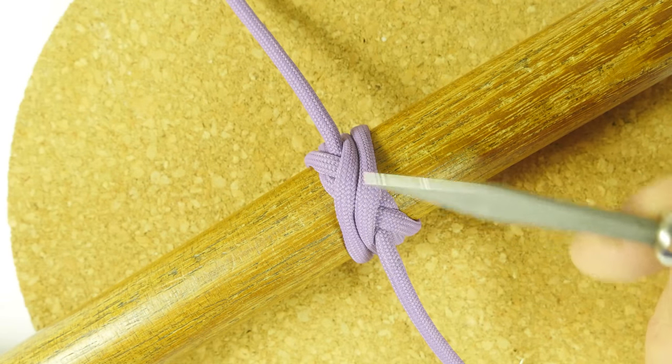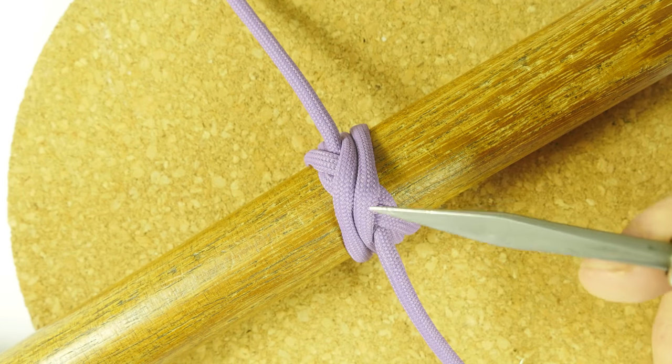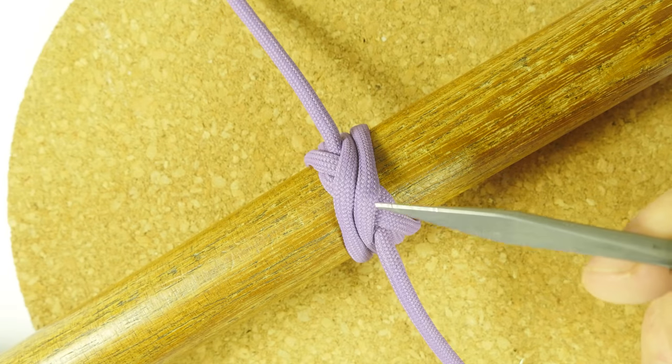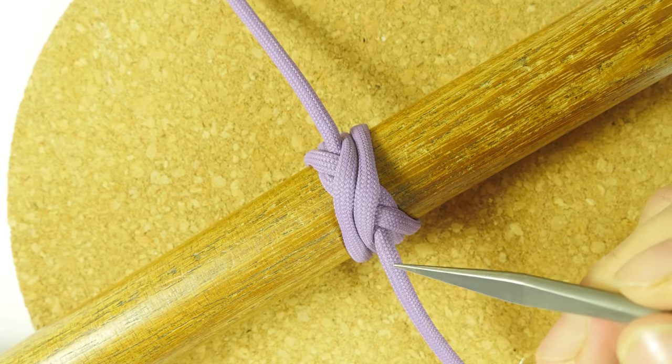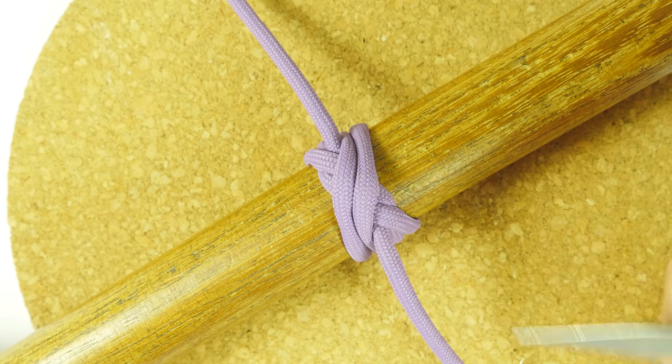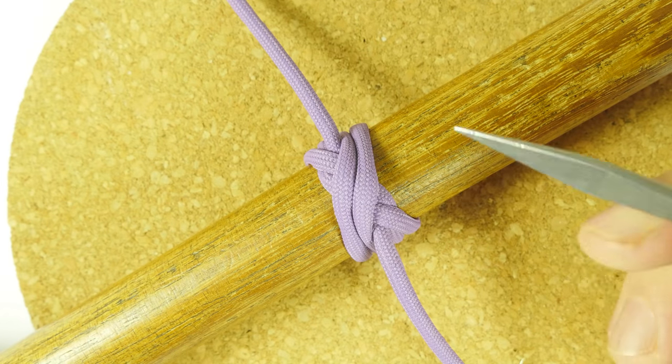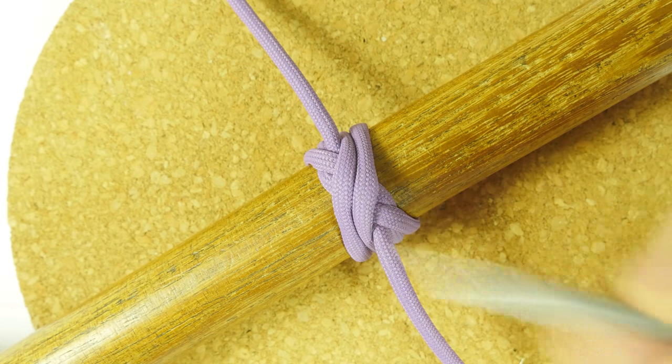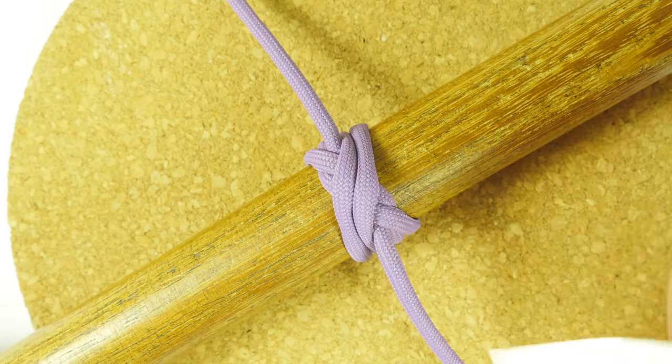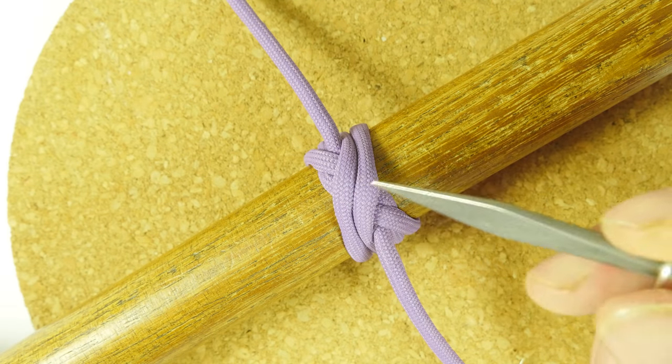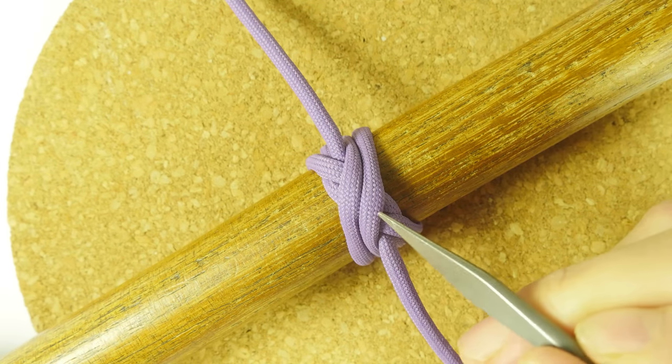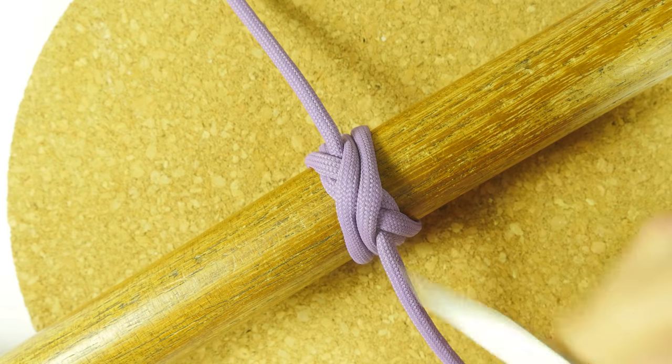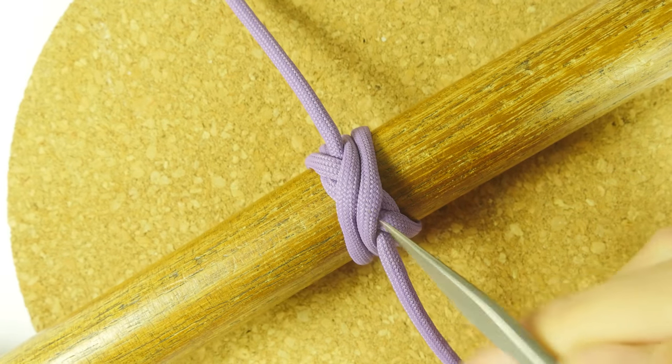The boa knot, as you can see here, is a binding knot. This means that we use it to attach a rope onto an object, perhaps a rail, or to bind objects together. In any case, the most important aspect of a binding knot is that it is secure.